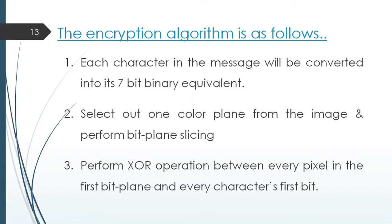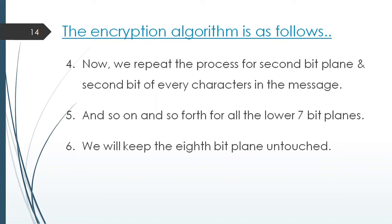Let's dive deep into the encryption algorithm. An RGB color image and a binary string is provided to the algorithm. It selects a predefined color plane of the RGB image. It can be either red, green or blue plane. Performs XOR operation between every pixel in the first bit plane and every character's first bit. This process is repeated for second bit plane and second bit of every character in the message. And so on and so forth for all the 7 bit planes. We keep the 8th bit plane untouched as it contains maximum details.